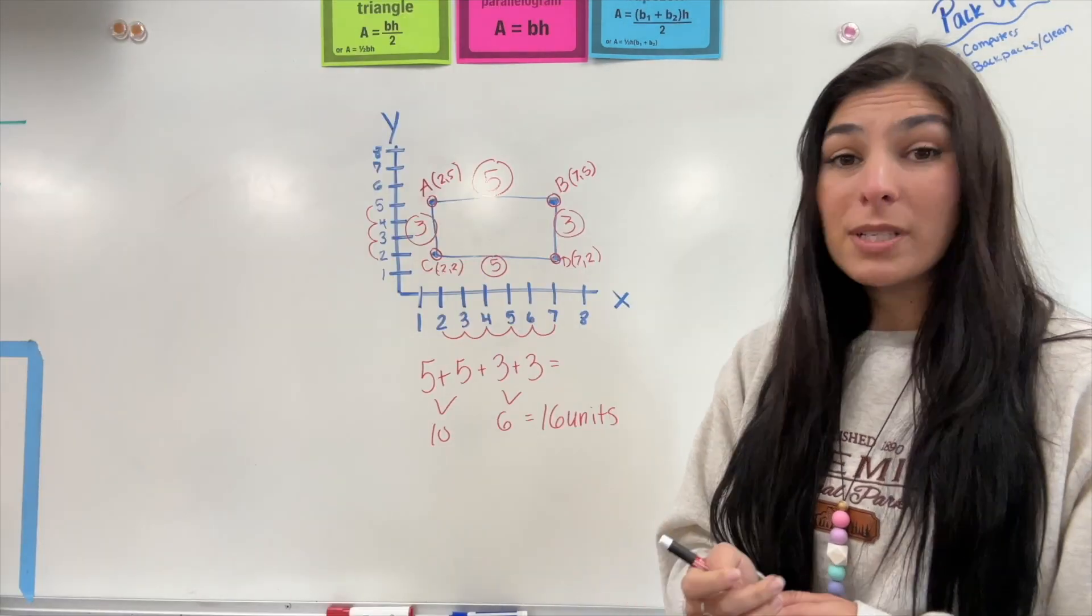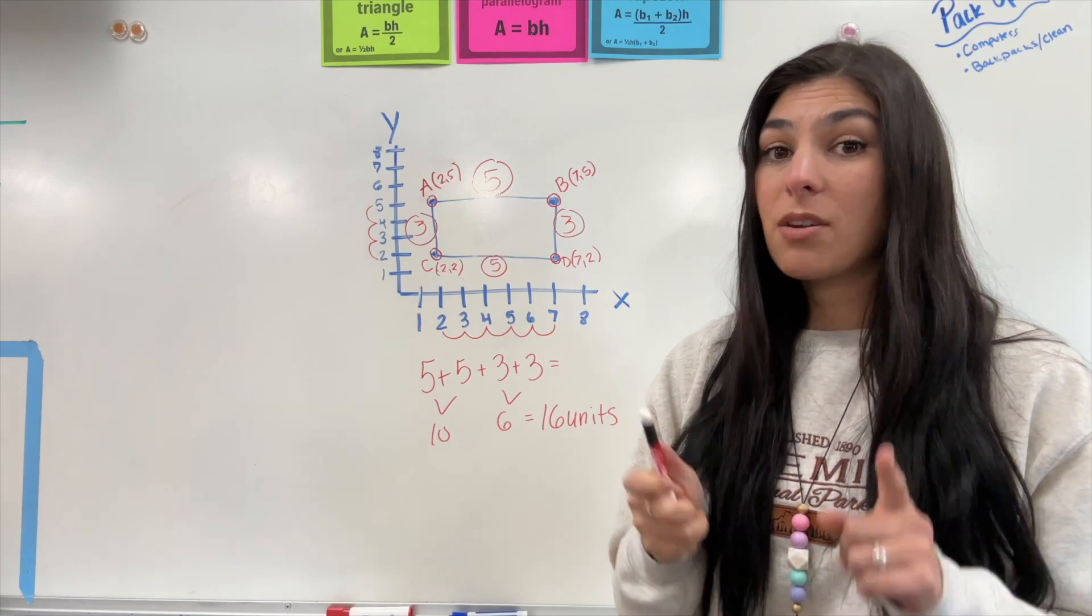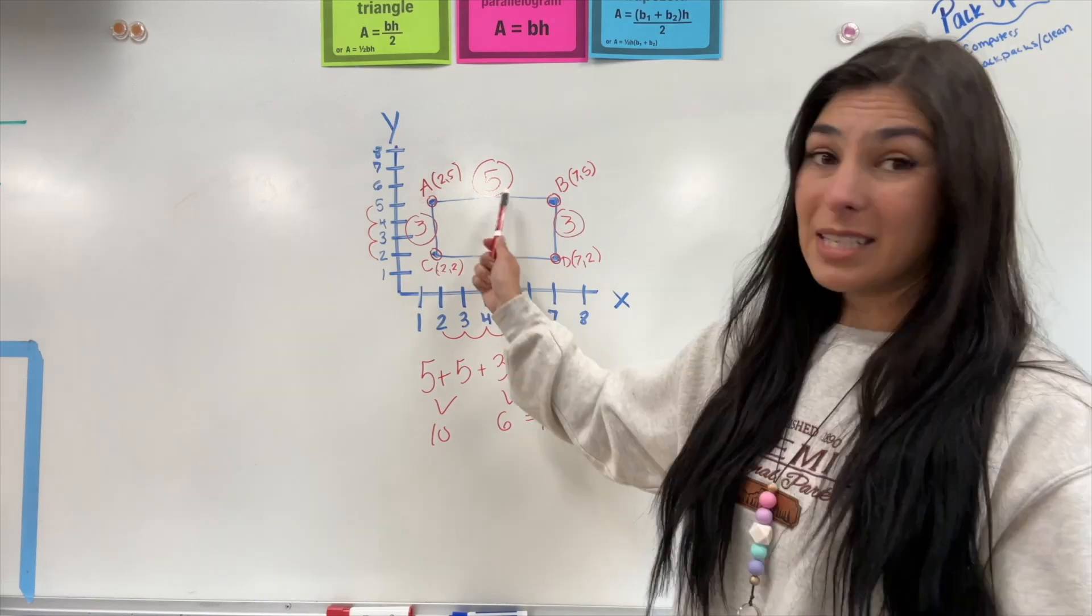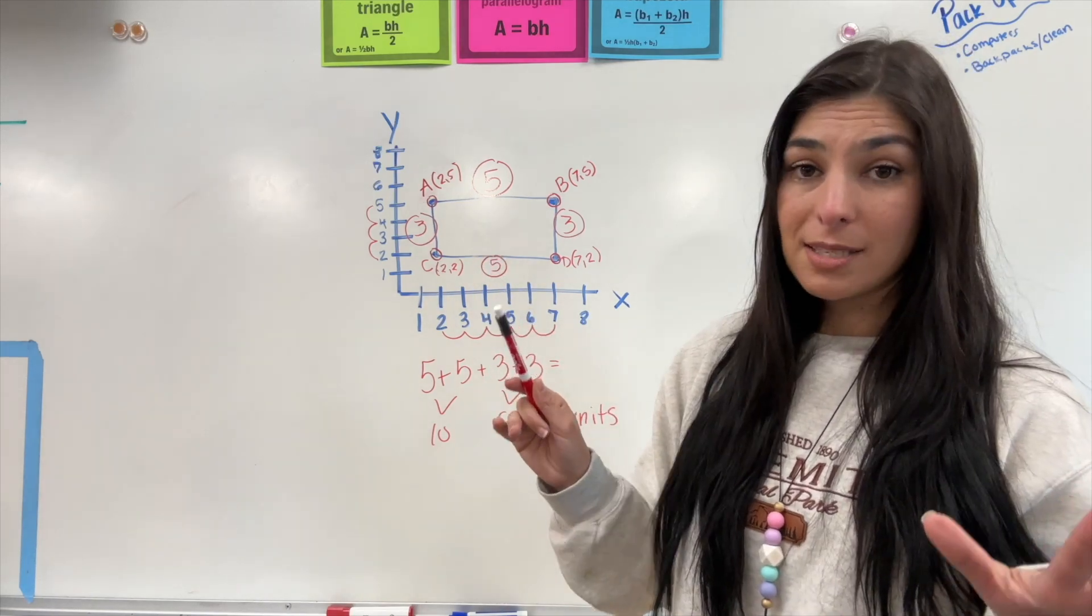Now, there's going to be times where it doesn't give you a graph. It's just going to give you the coordinates. And from there, you can either decide to graph the coordinates, or I'm going to show you a real simple way to find the distance of each side to add together for your perimeter by just looking at the coordinates. Let me show you that one.